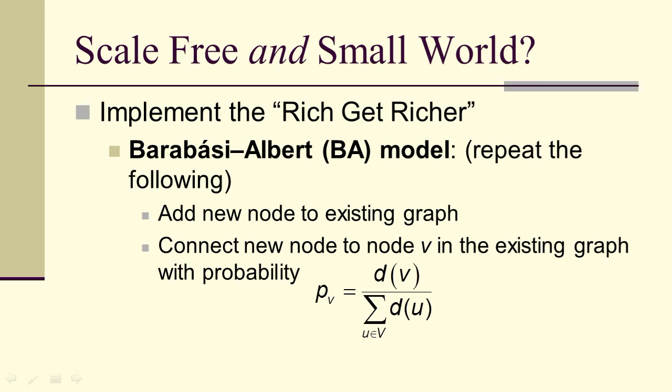Now can a graph be scale-free and small world? Let's look at an example where this actually happens. We implement the rich get richer, called the Barabasi-Albert model, the BA model. We'll keep repeating the following: we start with some graph, for instance a K nearest neighbor's graph, and we connect new nodes. We add a brand new node and connect it to a node V in the existing graph with probability of the degree over the sum of the degrees. This means that the higher the degree, the more likely you are to get a new vertex.